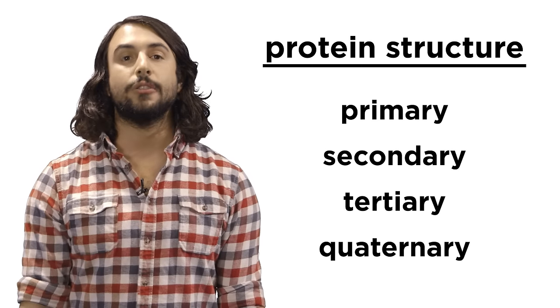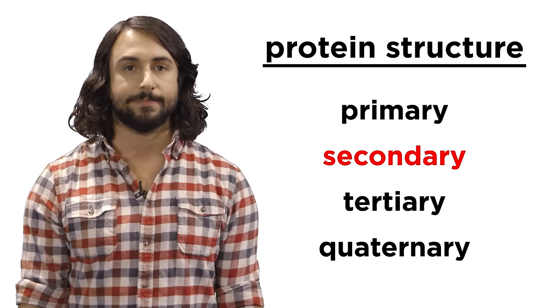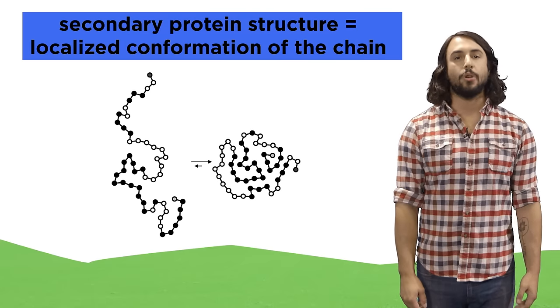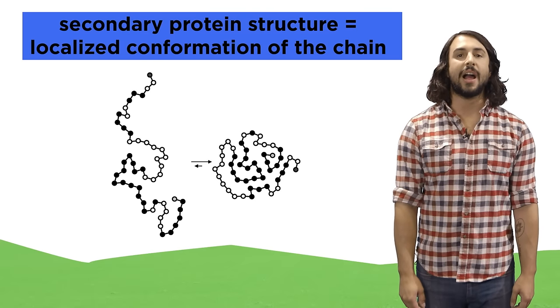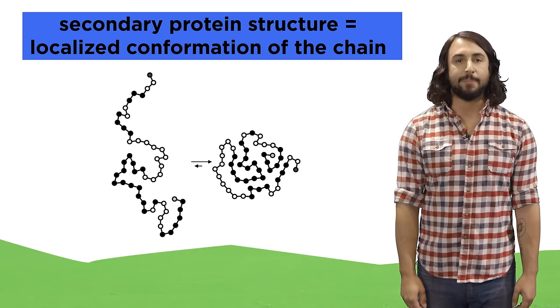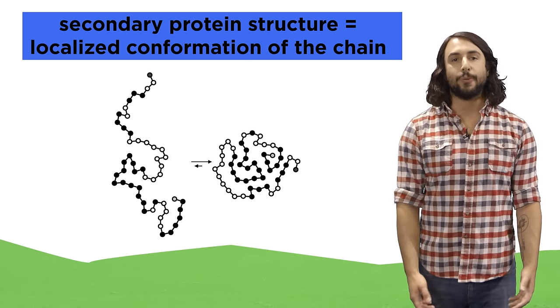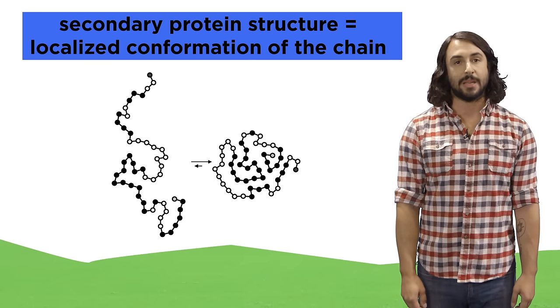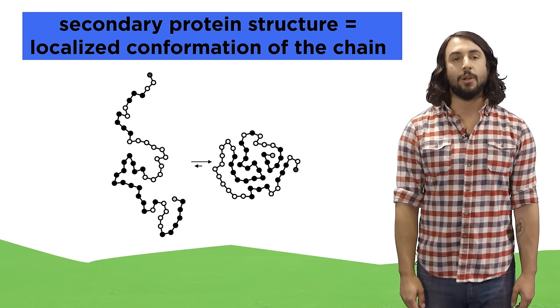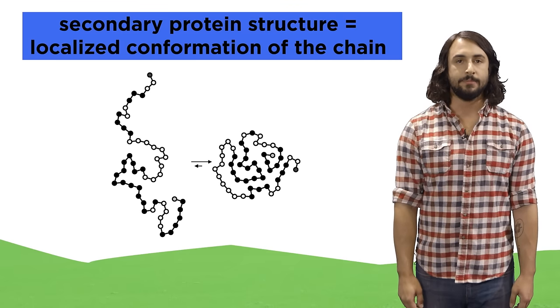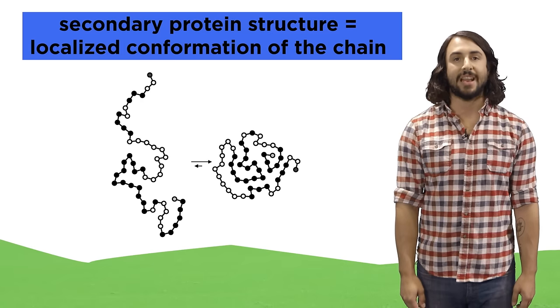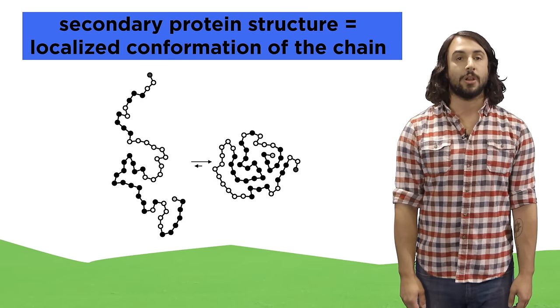To see this in action, let's look at secondary protein structure. Secondary protein structure describes localized conformations of the polypeptide backbone, meaning the folding pattern that a protein will exhibit over a few dozen amino acid residues. There are a few different motifs that a protein can utilize, so let's see what those are.